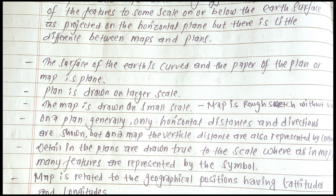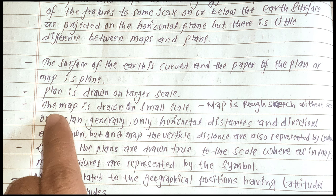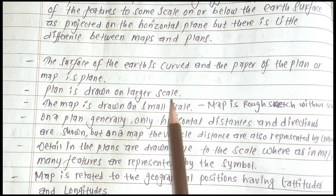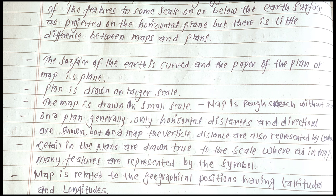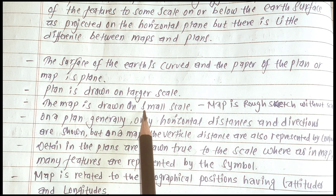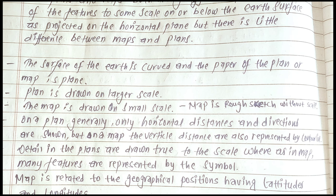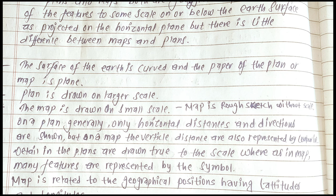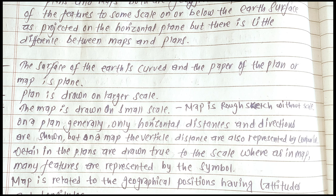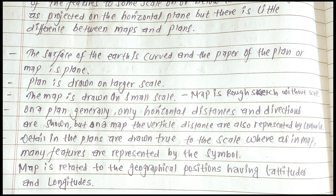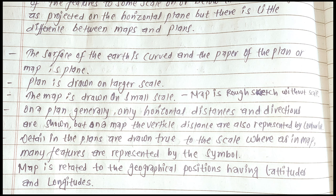A Plan is drawn on a large scale. A Map is drawn on a small scale. In both Map and Plan, generally only horizontal distance and direction are shown.